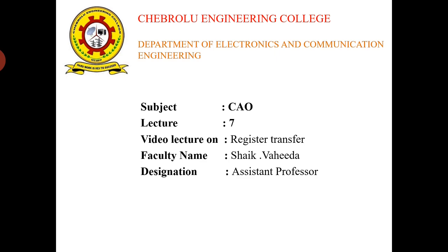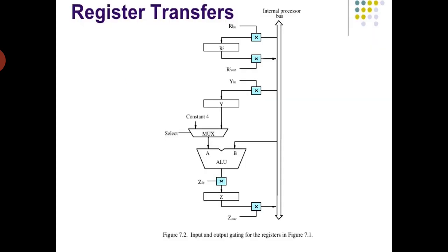From this topic we are discussing how the data is transferred within a processor — from one register to another register, from one register to the ALU, or from the ALU to another register. The control unit is used to control the remaining parts within a processor. In today's lecture we are discussing register transfer: how the data is transferred from one register to another register.